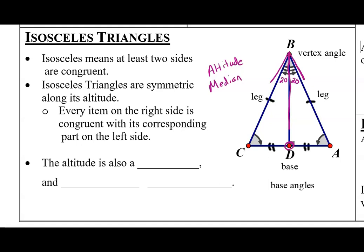And because it forms the right angle at the bottom here and splits the bottom in half, it is also a perpendicular bisector. So, in this case, the altitude is also a median and a perpendicular bisector.